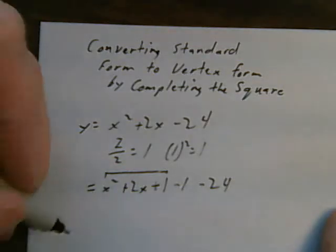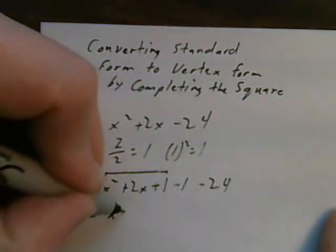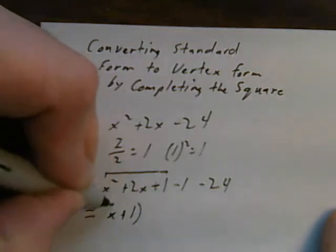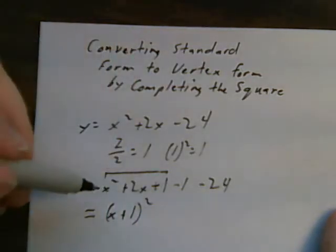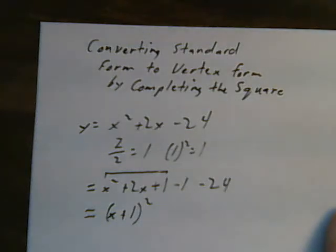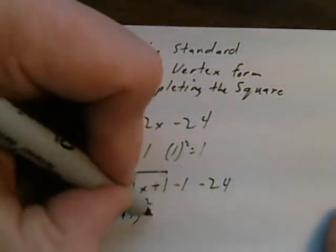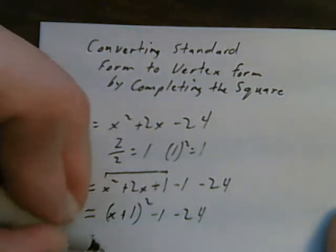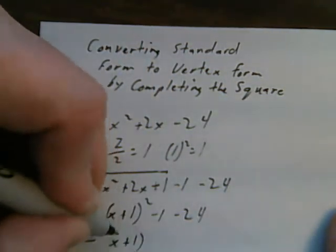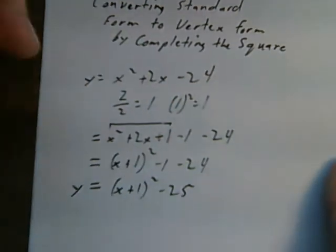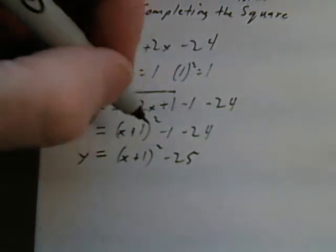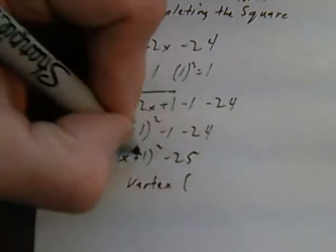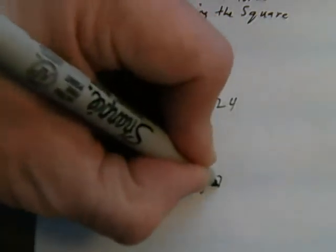I can factor that. That works out to be x plus 1 squared. If I were to factor that I'd get x plus 1 times x plus 1. I've got the minus 1 and the minus 24. Now I just collect my like terms. I've got x plus 1 squared minus 25. I now know the vertex. The vertex is negative 1 comma negative 25.